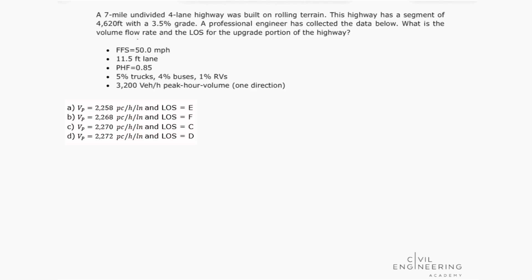The problem states like this: A seven-mile, undivided, four-lane highway was built on rolling terrain. This highway has a segment of 4,620 feet with a 3.5% grade. A professional engineer has collected the data below. What is the volume flow rate and the level of service for the upgrade portion of the highway?